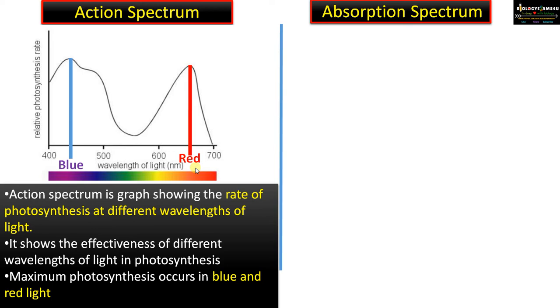Here you can see a dip in the green region, indicating that minimal photosynthesis occurs with green light. Green light is not absorbed by the pigment molecules, which is why plant leaves appear green - they reflect green light.